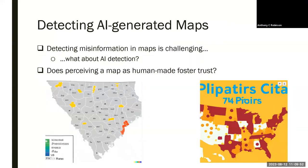One thing that might affect people's trust in maps is whether they see it as created by AI or by a human. Current literature on detecting misinformation suggests that people have a hard time detecting if misinformation is present in maps. Since AI-generated maps, especially with DALL-E, use synthetic data and often have misleading information, people might also have a hard time detecting if a map is generated by AI.